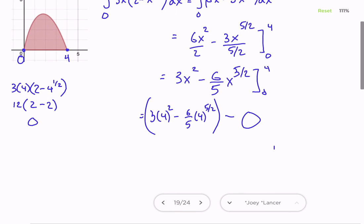And so we have 3 times 16, which is 48, and then 6/5, so 4 to the 5/2, you take the square root first, that takes care of the half, so that's 2, and then 2 to the 5th power is 32.